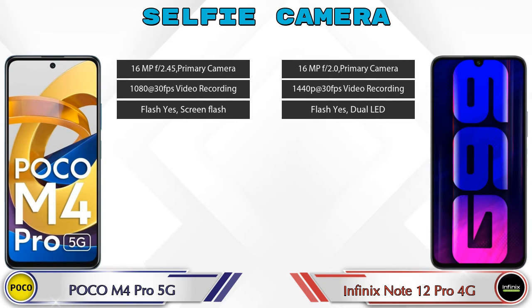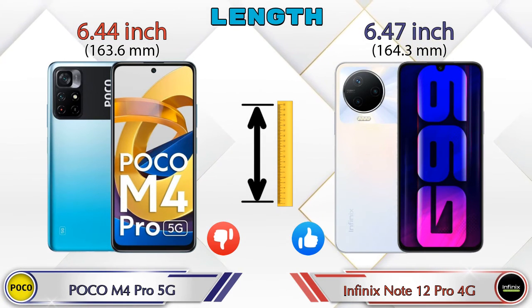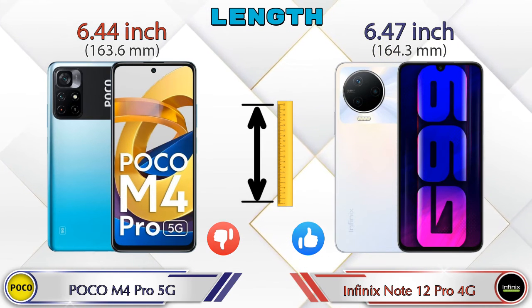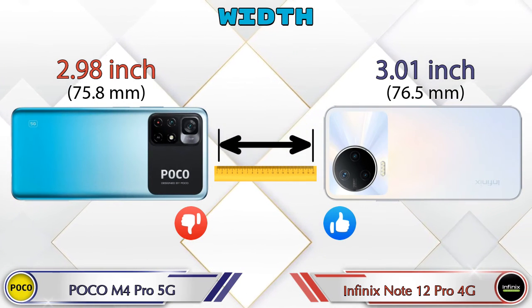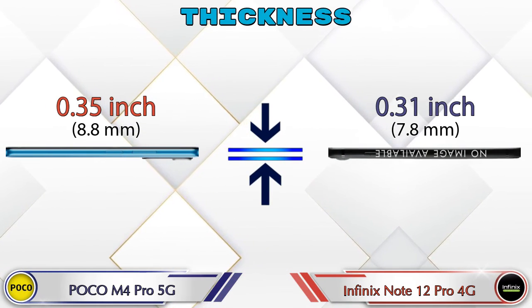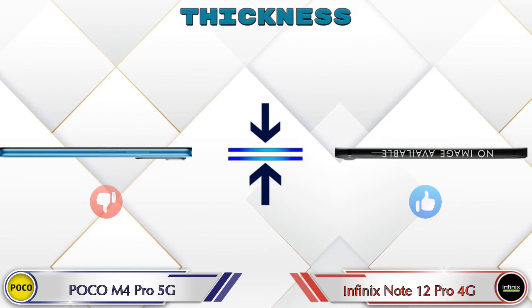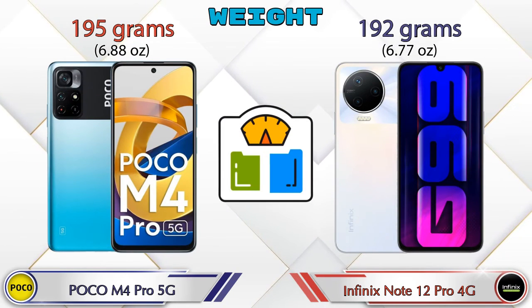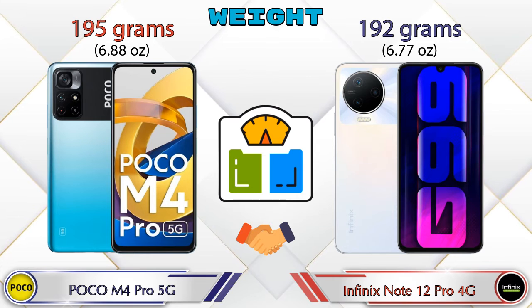Now let's check the dimensions. The length of the M4 Pro 5G is 6.44 inches and the Note 12 Pro 4G is 6.47 inches. The width of the M4 Pro 5G is 2.98 inches and the Note 12 Pro 4G is 3.01 inches. Thickness: the M4 Pro 5G is 0.35 inches and the Note 12 Pro 4G is 0.31 inches. Weight: the M4 Pro 5G is 195 grams and the Note 12 Pro 4G is 192 grams — both are almost similar.